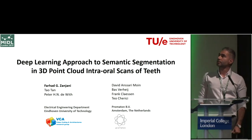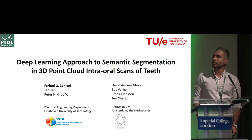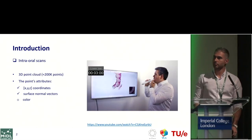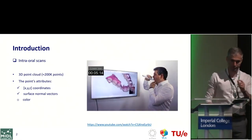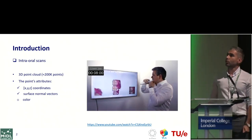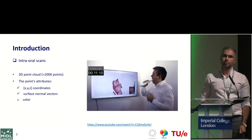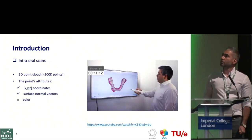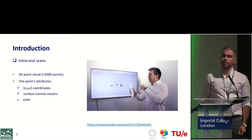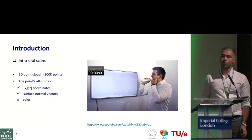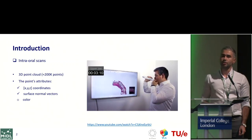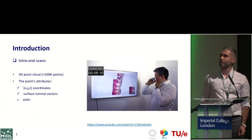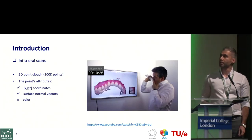Intraoral scanners are used for scanning the 3D profile of oral anatomical structures. The output is several thousand points, each represented by XYZ coordinates. In the case of generating a mesh, a normal vector per point is included, and depending on the manufacturer, we may also have color per point.